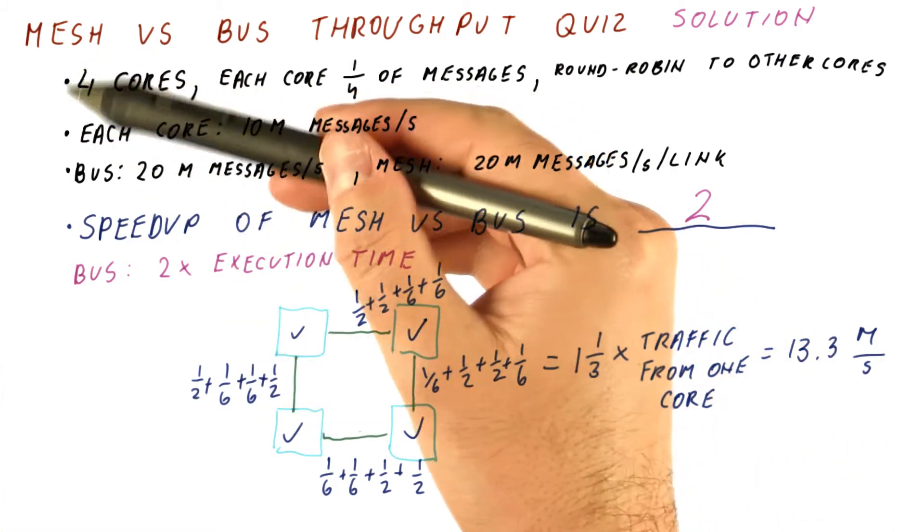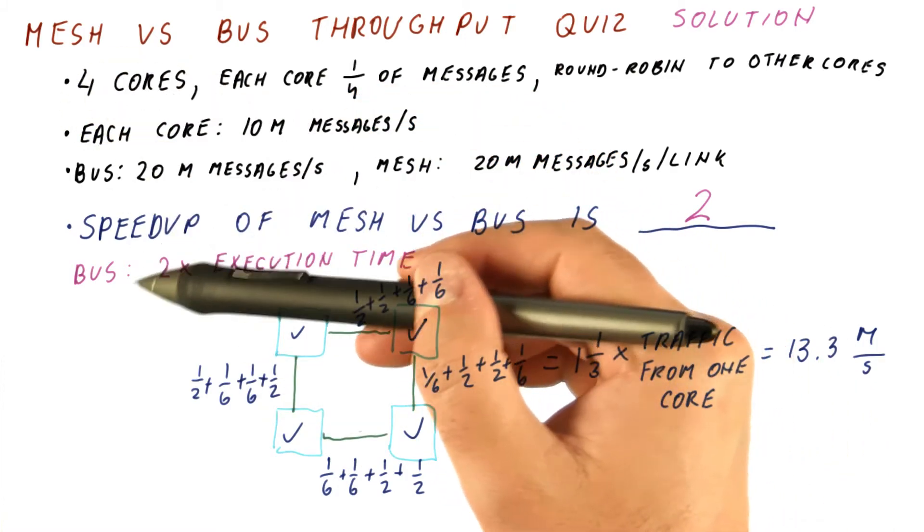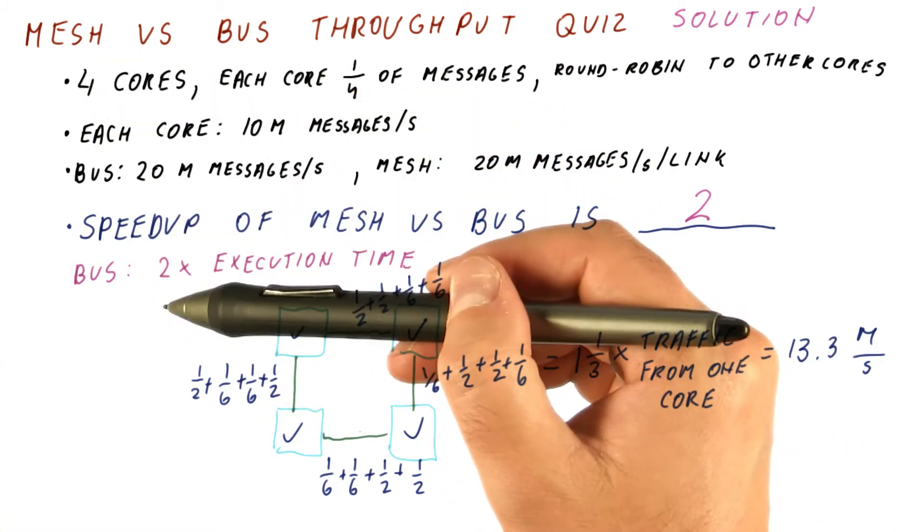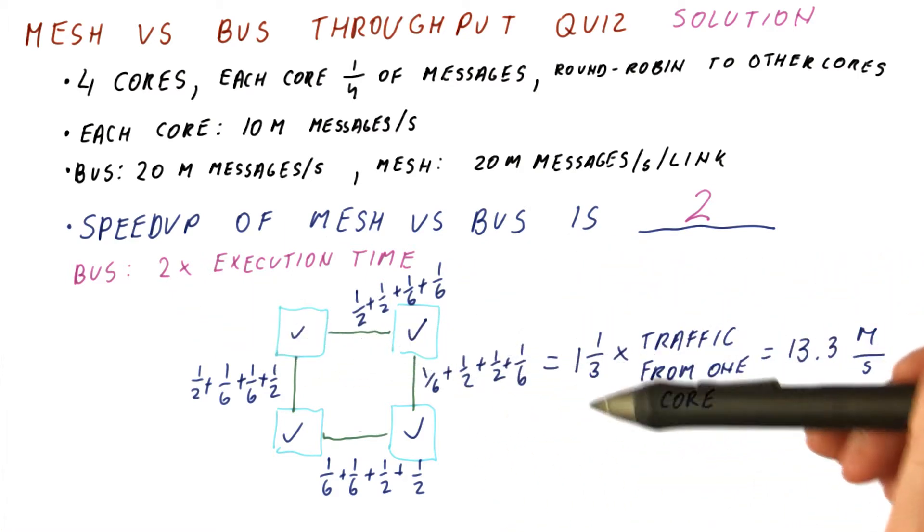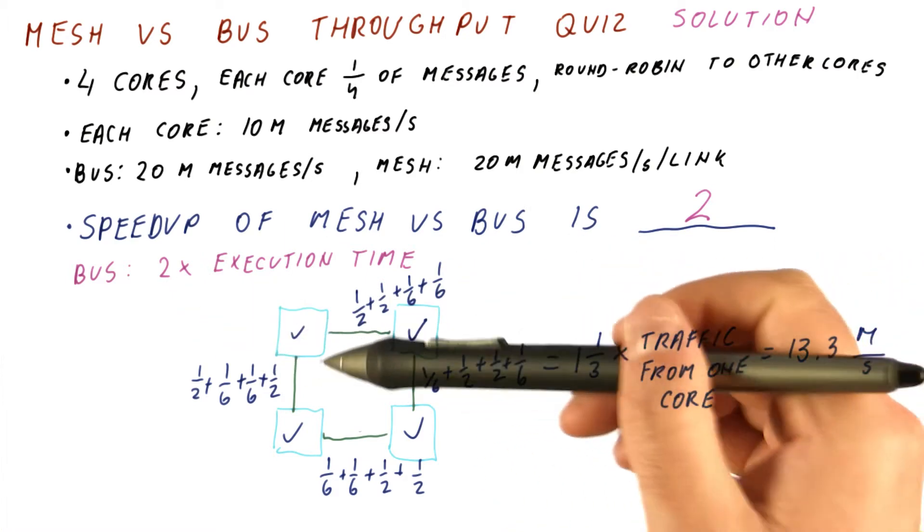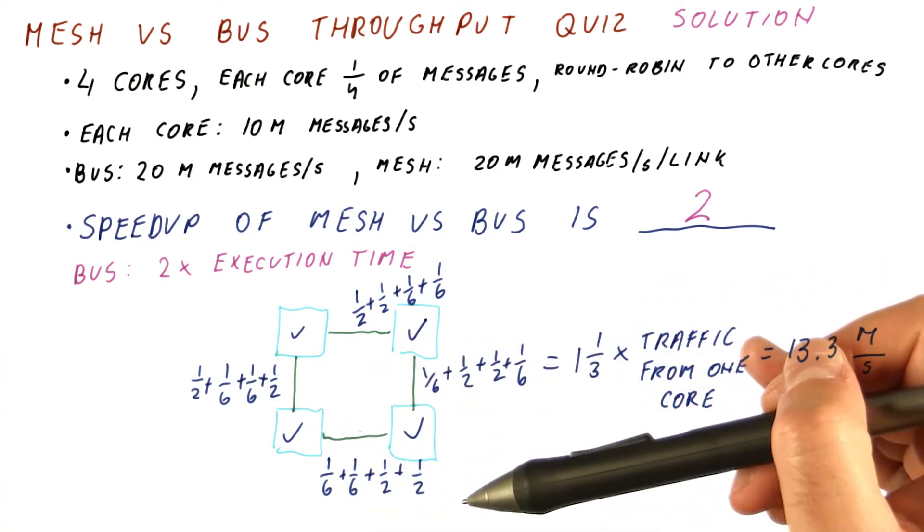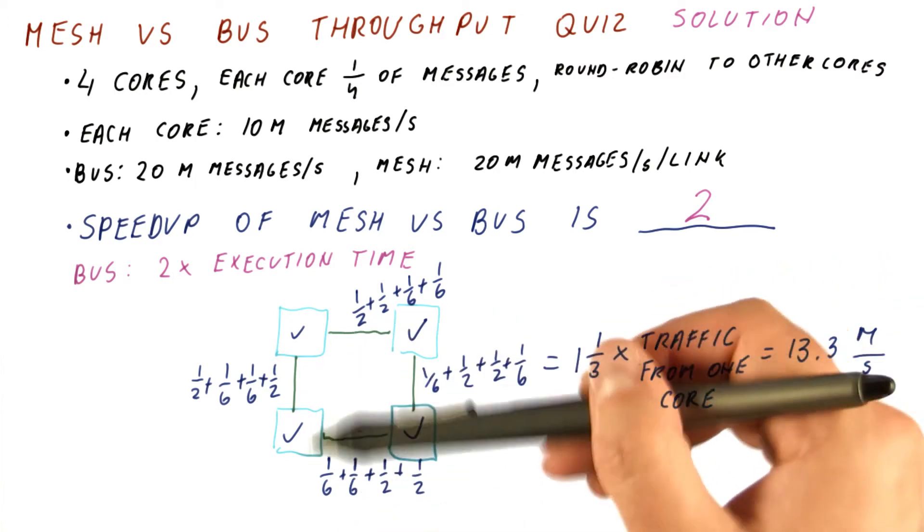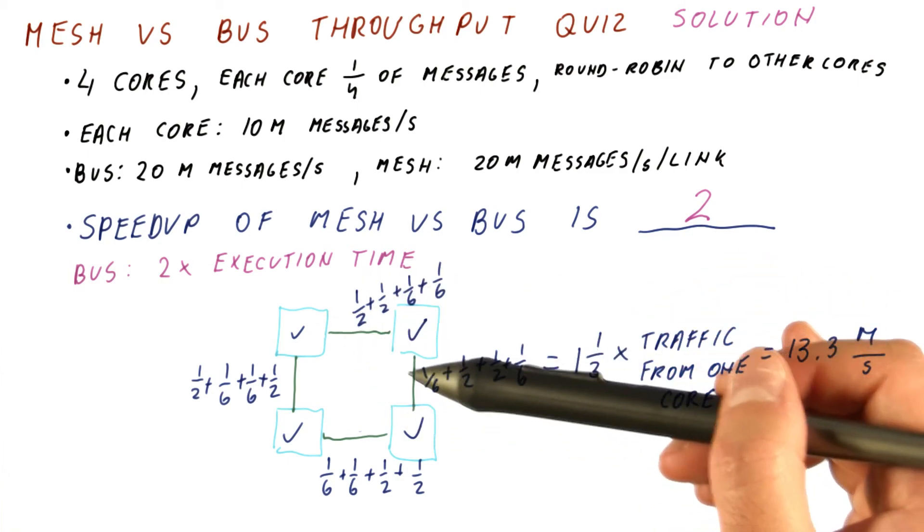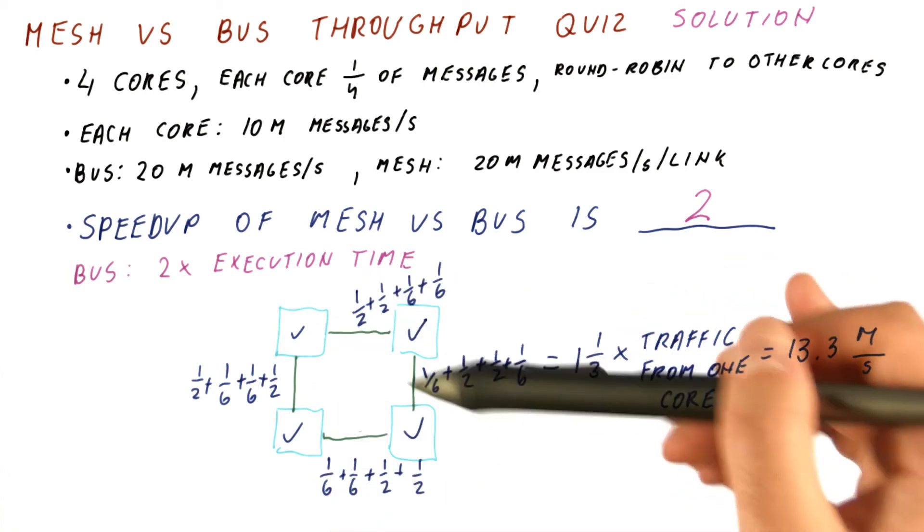If we went to a larger network than four cores, the bus would have to proportionally slow down. While the mesh would get more links. And it will be a while until any of the mesh links become saturated. So clearly, the mesh is far superior to the bus in terms of the traffic it can support when we go to more cores.